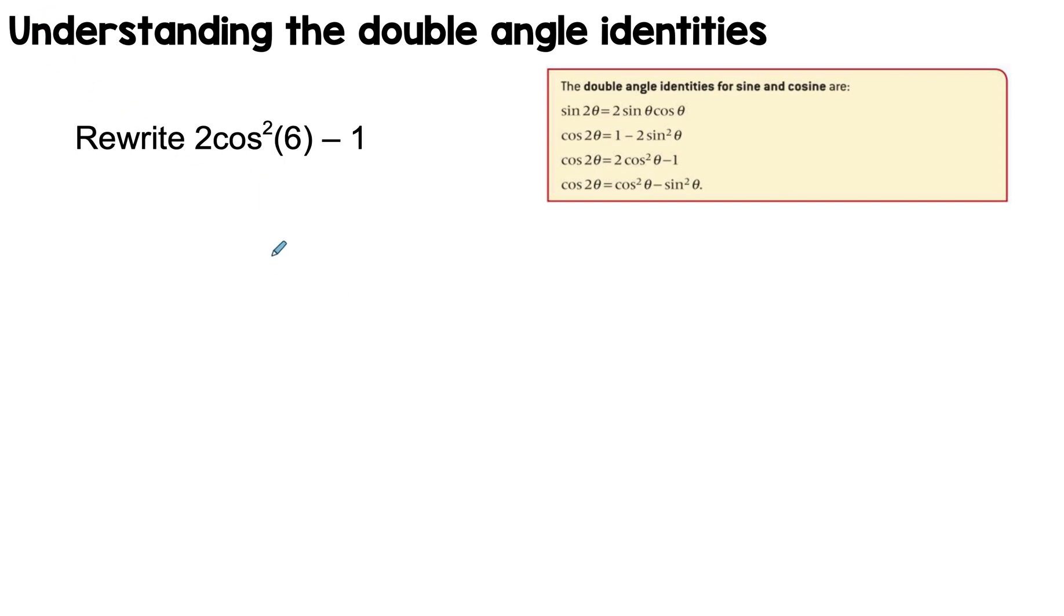Another example: I have this, and you could immediately match it with one of these, which is cos(2θ). So just identify your theta here, and then I can just rewrite this as cos(2) times my theta. My theta here is 6, and so I have cos(12), and that's it.